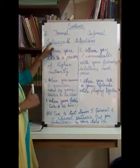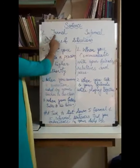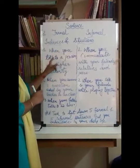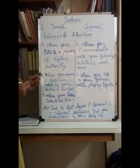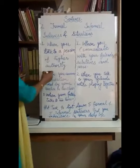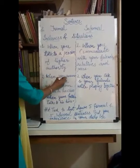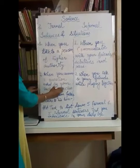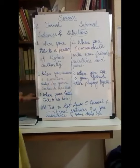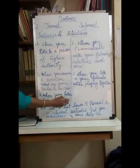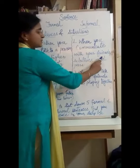Our second objective is formal and informal expression of sentences. The first instance for formal communication is when you talk to a person of higher authority — like the principal, vice principal, in-charges, and your teachers. The second instance is when you answer a question asked by your teacher in class. The third instance is when your father talks to his boss.